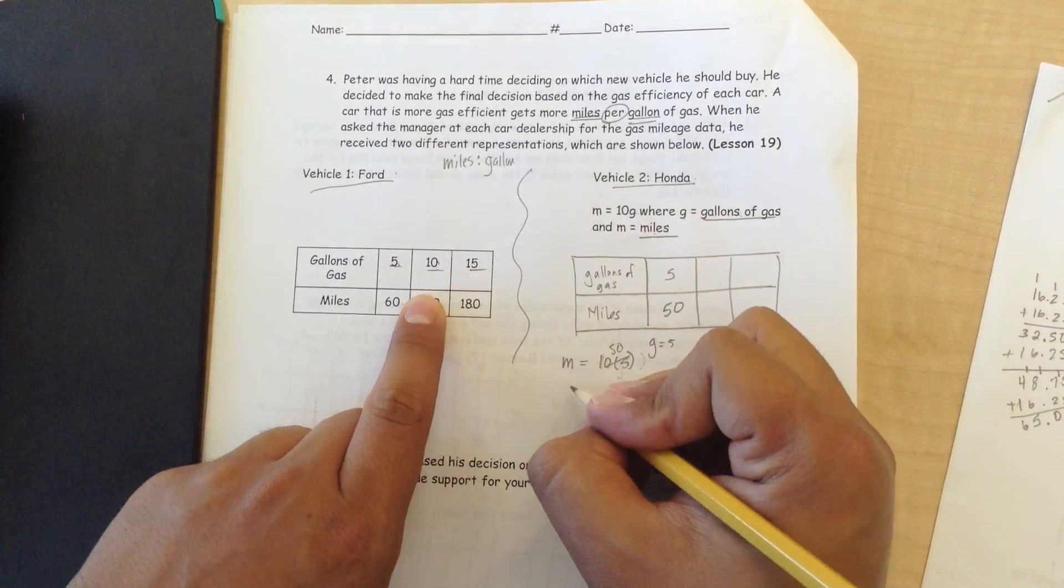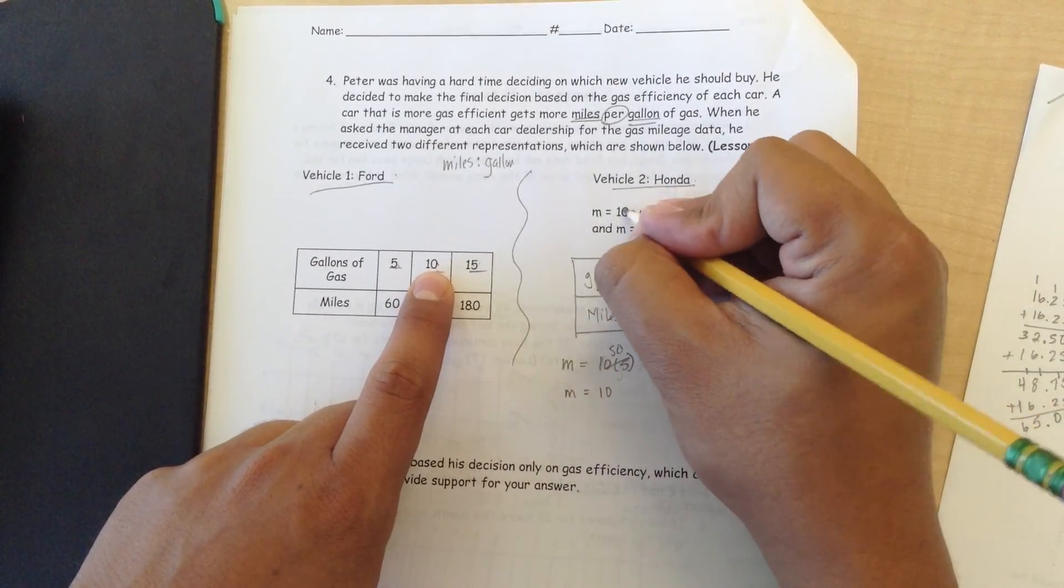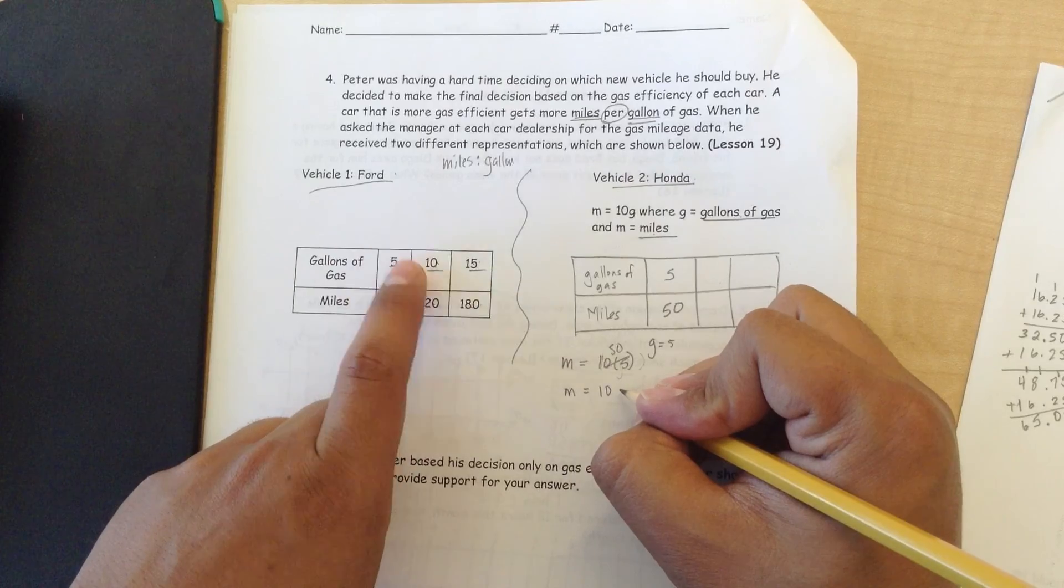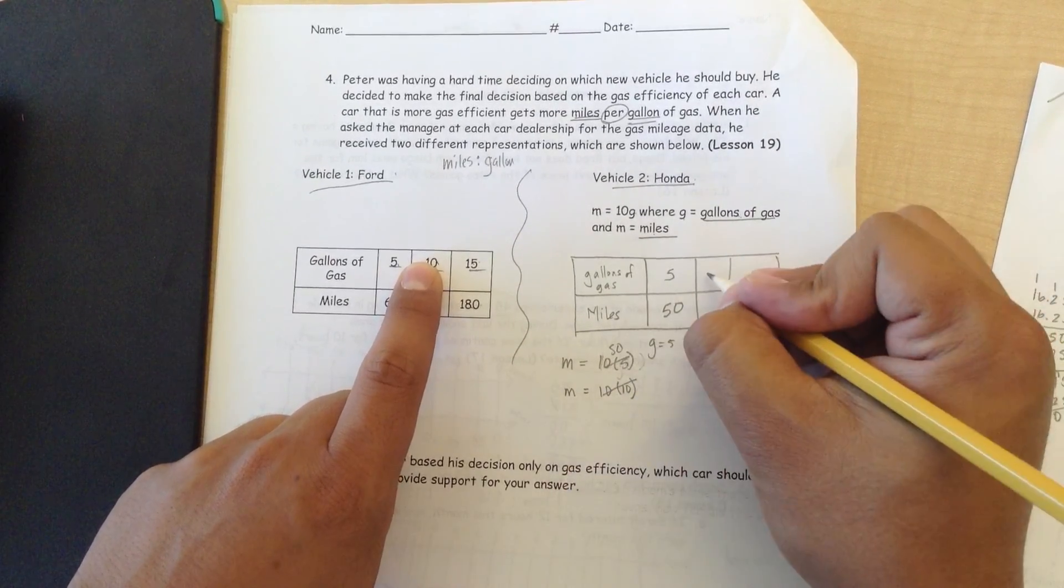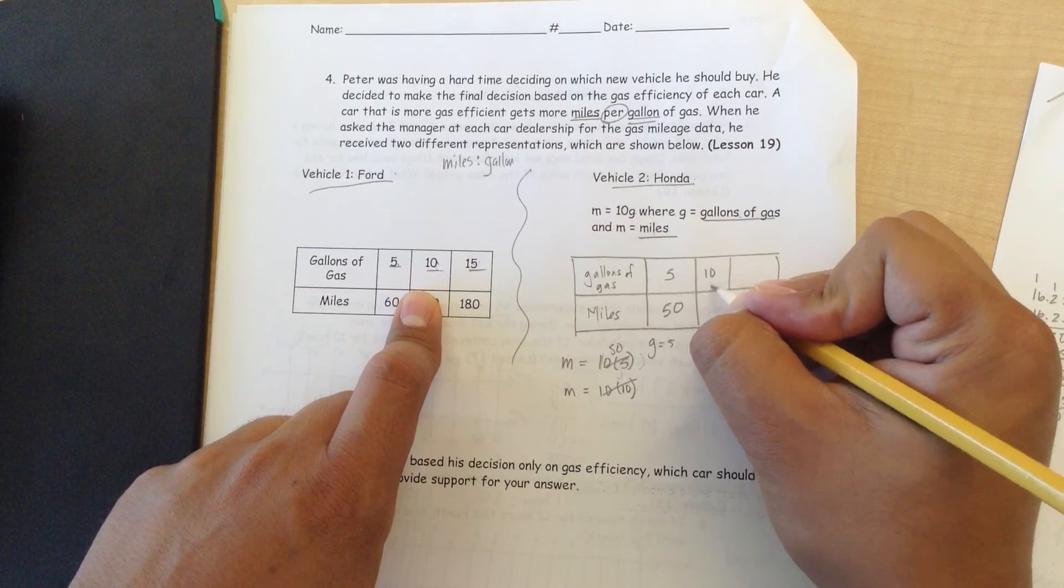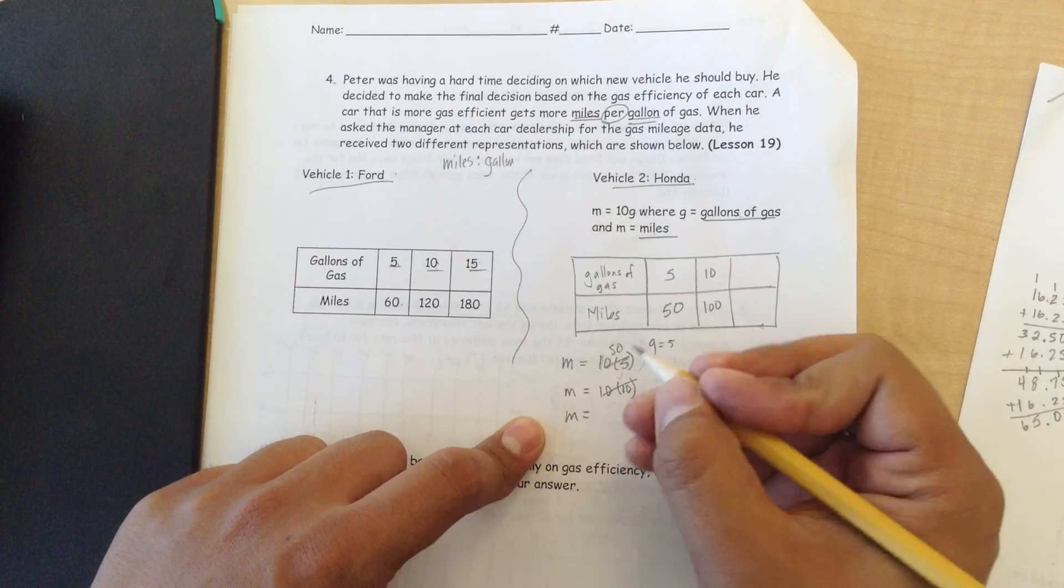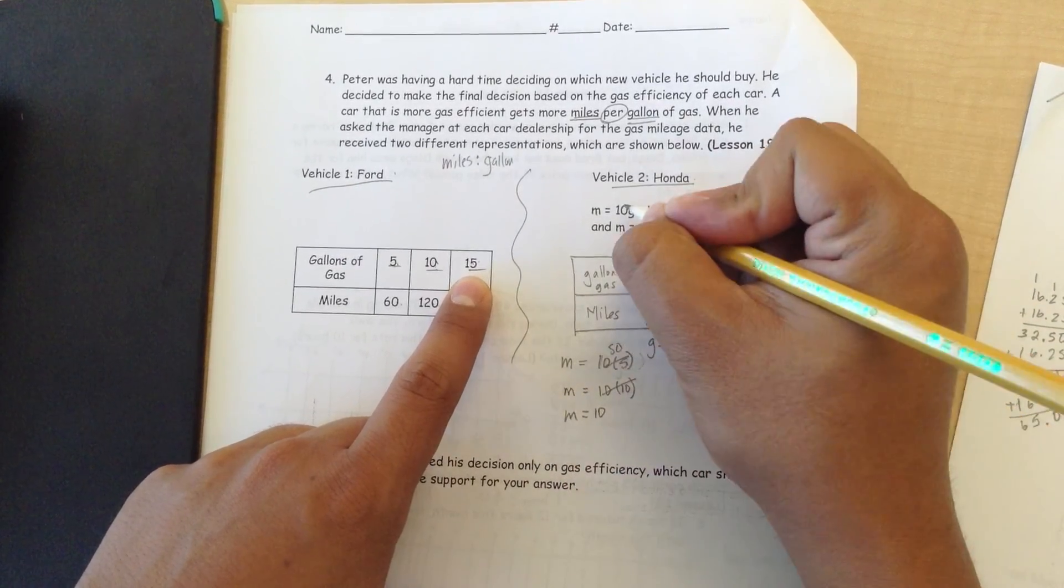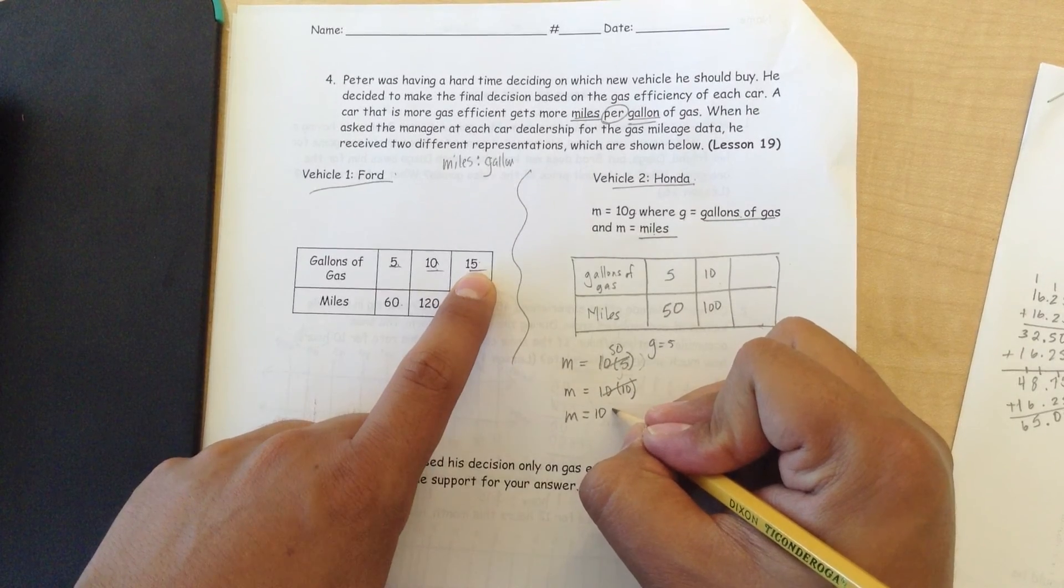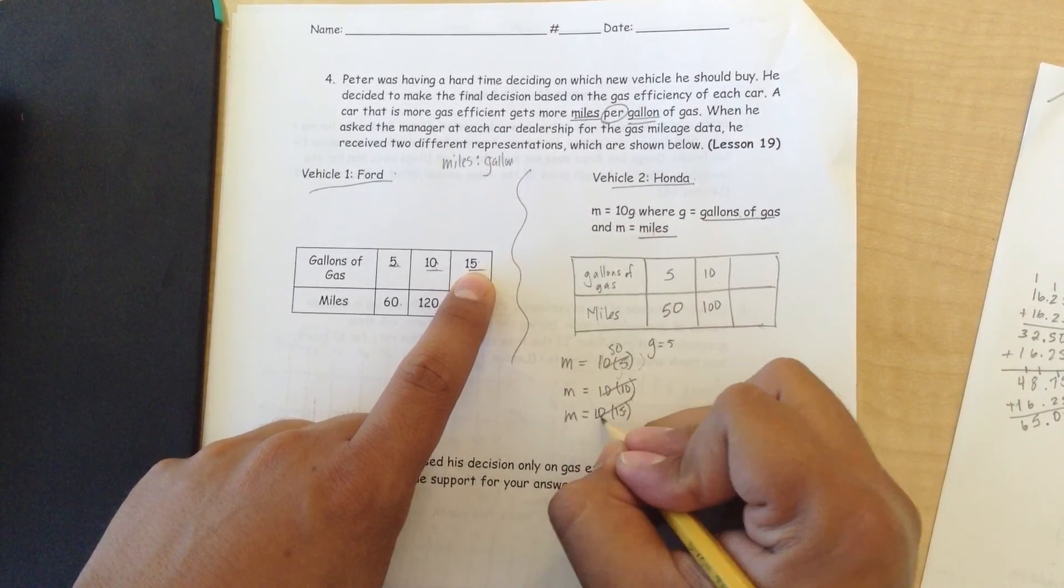Let's try this again, miles equals 10 from this 10. Gas, gallons of gas from this 10 now, what does that equal? 100, 10 times 10 is 100. Let's look at this now, 15, so I'm going to put the 10 from the original formula that they gave us, and the g, which is now this time 15, so 10 times 15 is 150.